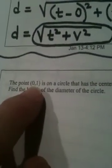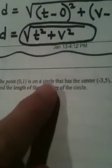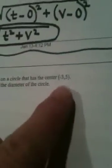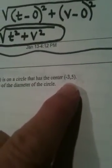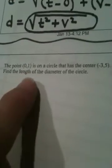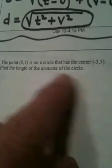Okay, the next question. We are being told that (0, 1) is a point on a circle, and the center of the circle is (-3, 5). And it wants us to find the length of the diameter of the circle.